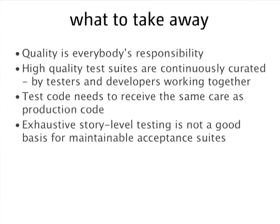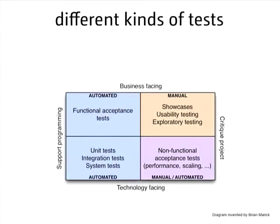When looking at tests, there's a nice way of classifying them that Brian Merritt came up with. He's one of the signatories of the Agile Manifesto and he came up with this quadrant diagram, which classifies tests according to whether they support programming or critique the project on one axis, and whether they're technology-facing or business-facing on the other. Technology-facing tests that support programming — unit tests, component level tests, system tests — should all be automated. Up in the top right, showcases, usability testing, exploratory testing — everything needs to be manual, where you need creativity and imagination that computers don't have.